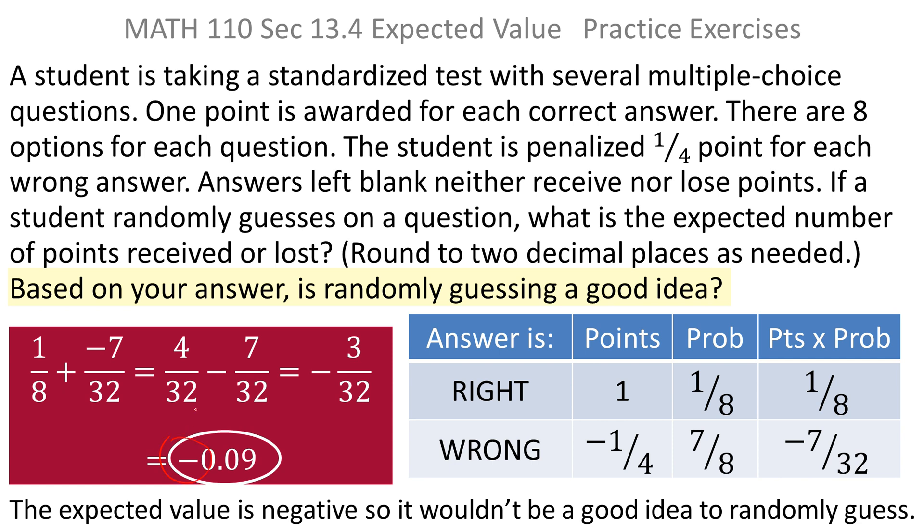That means you're most likely to lose points if you are just randomly guessing. So if you had a positive expected number of points, it would probably be a good idea just to randomly guess. But if it's a negative expected number of points, then that means it's not a good idea just to randomly guess.